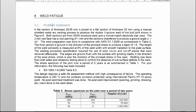The thick section is ground in the direction of the principal stress to produce a taper of 1 to 5. The height of the weld convexity is measured at 8% of the weld width with smooth transition to the plate surface.